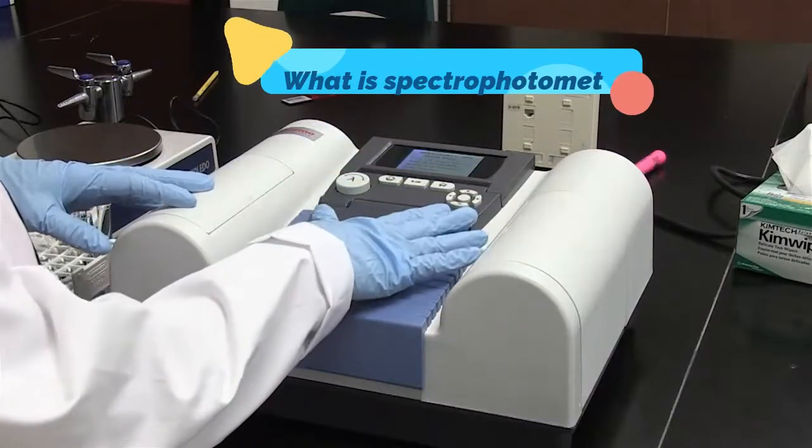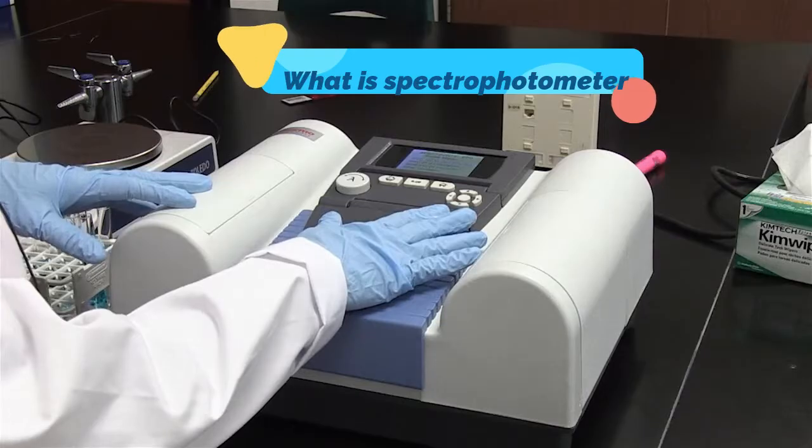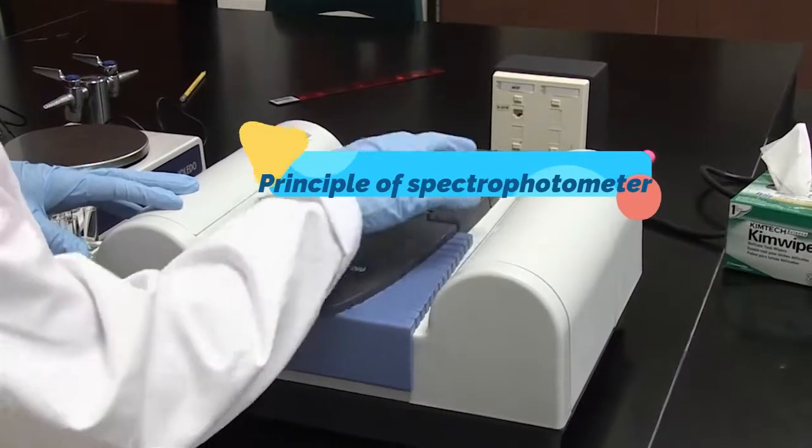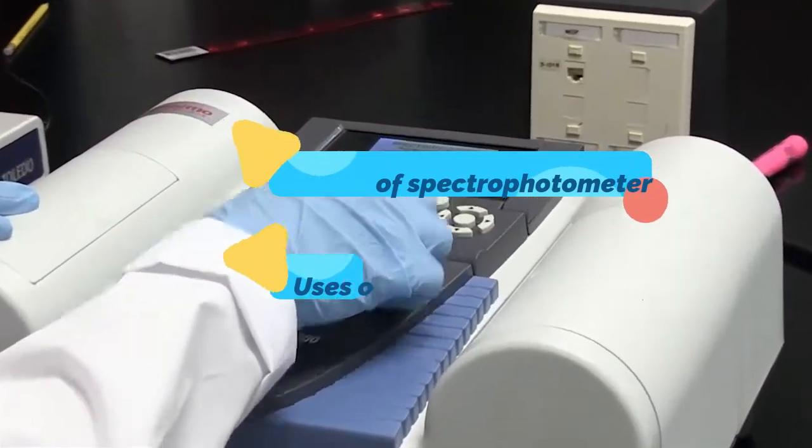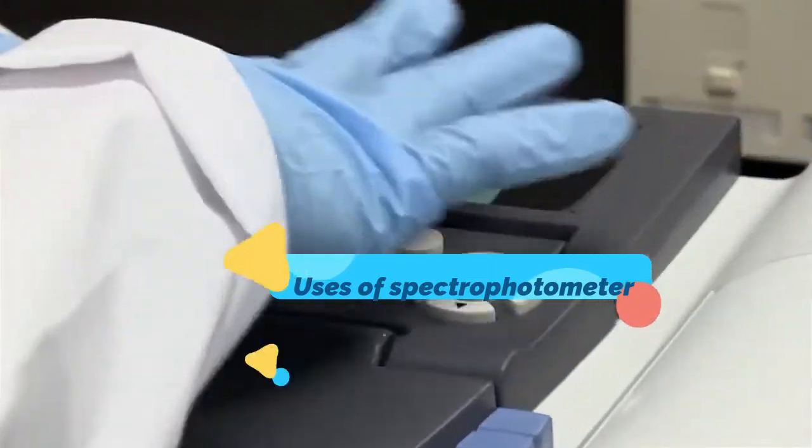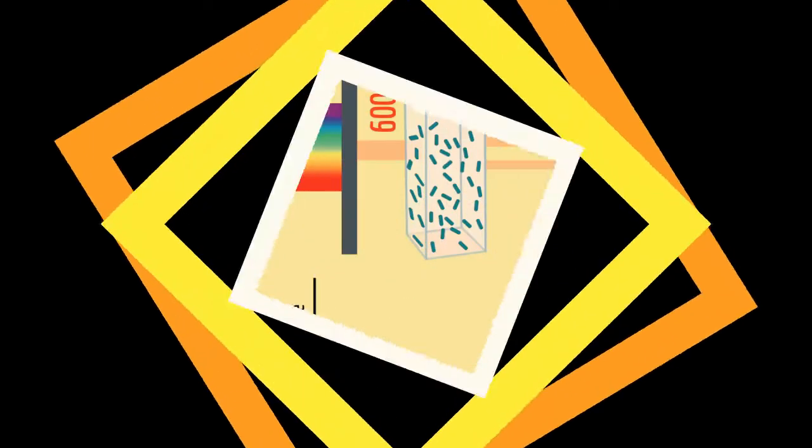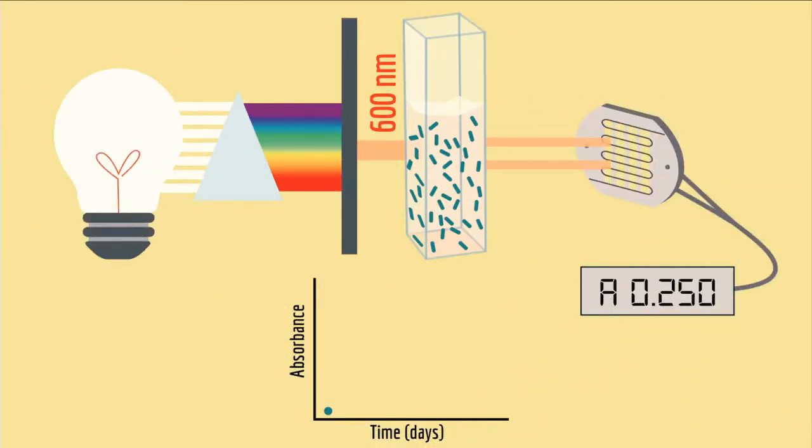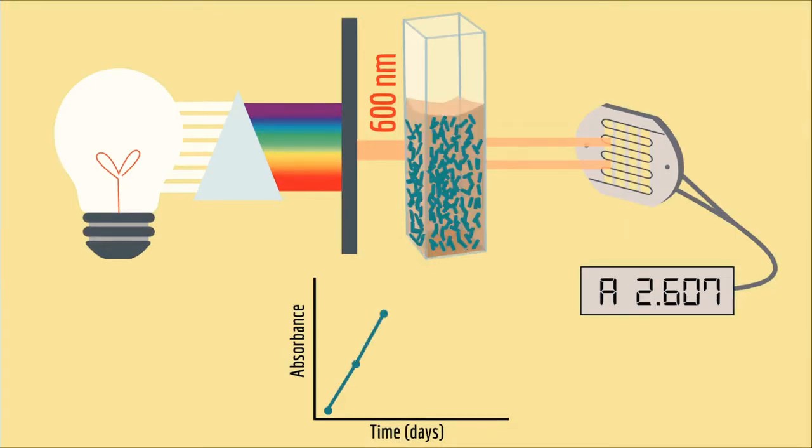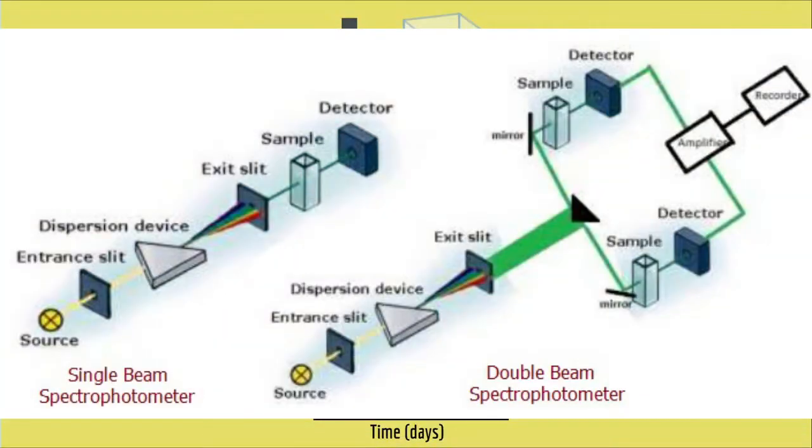This video includes what is spectrophotometer, working principle of spectrophotometer, uses of spectrophotometer, and how to use spectrophotometer. The spectrophotometer is an optical instrument for measuring the intensity of light in relation to wavelength. Based on the amount of light absorbed by a colored solution, a quantitative analysis of the solution can be done. There are two classes of spectrophotometers: single and dual beam.